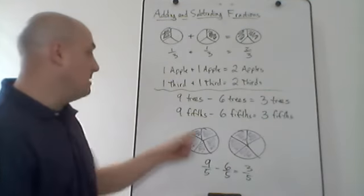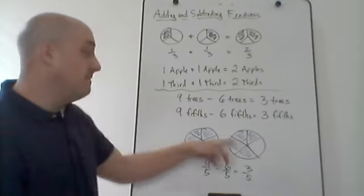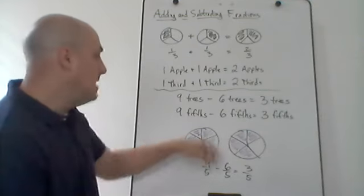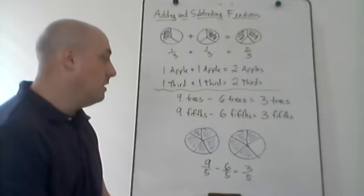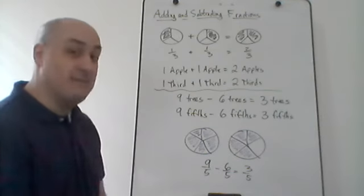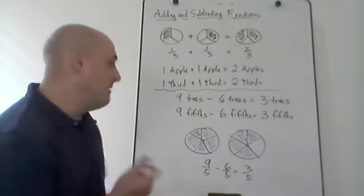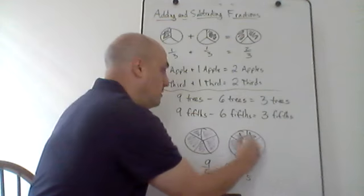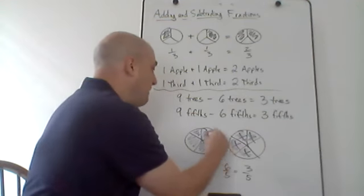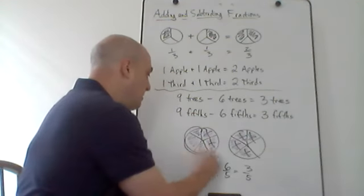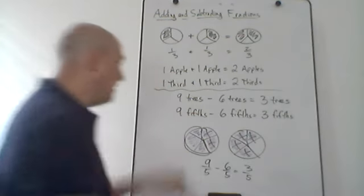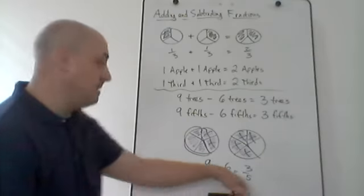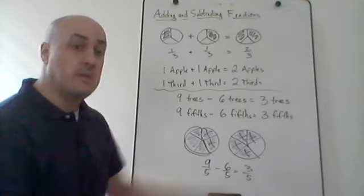Visually, what that means: I have two circles here cut into five pieces each. Nine of those total pieces are filled in, so that represents nine-fifths. If I take away six of those fifths — one, two, three, four, five, six — that leaves me with these three here, three-fifths left over. So nine-fifths minus six-fifths equals three-fifths.